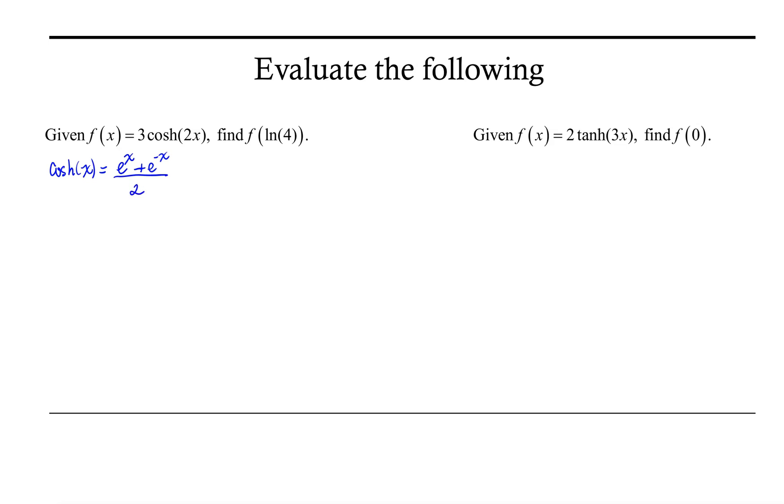So if I were to use that information, I could rewrite my f of x function as 3 times e to the 2x plus e to the negative 2x, all divided by 2.